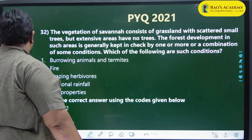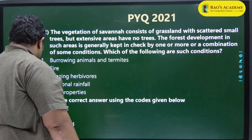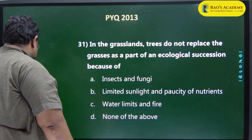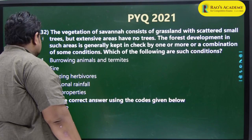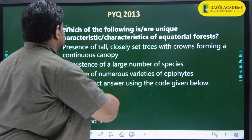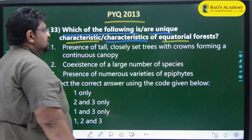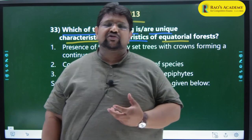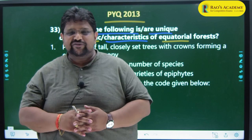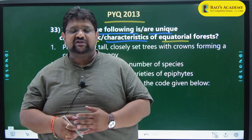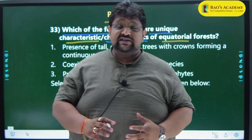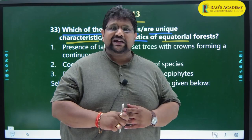I have already discussed 30 questions in my previous class, so starting from question 31. The 37th question is from 2013 prelims: 'Which of the following is a unique characteristic of equatorial forest?' Equatorial forests are also known as tropical rainforests - those present in and around the equator, areas with very high rainfall and very high temperature.